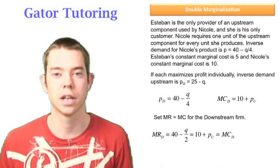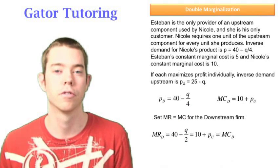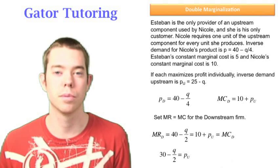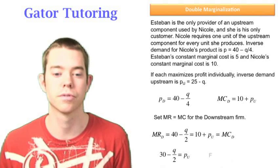Marginal cost we leave as 10 plus PU, and now we're going to solve for PU. And we see that PU is equal to 30 minus Q over 2, so this statement was false.